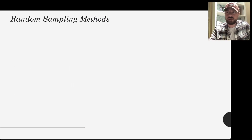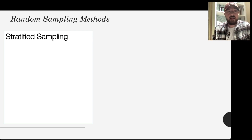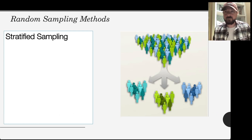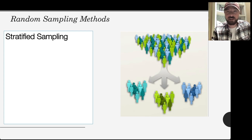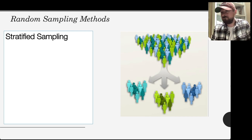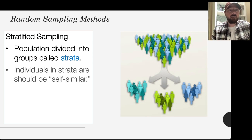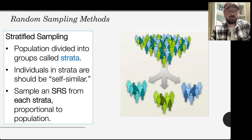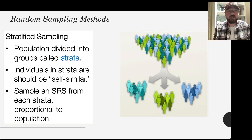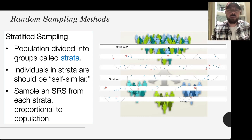From systematic sampling, we get into more complicated methods. The first is stratified sampling. Stratified sampling begins when certain individuals of a population are similar to each other but different from others. You divide the population into subgroups called strata, then randomly pick some people from each stratum. The key is that everyone within a subgroup is similar to each other and different from everyone else, and you randomly pick from each group in proportion to how they exist in the population.